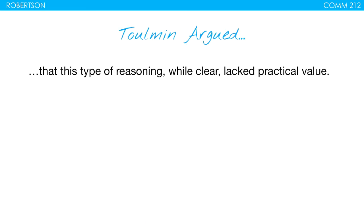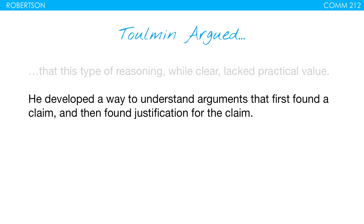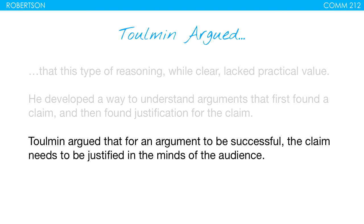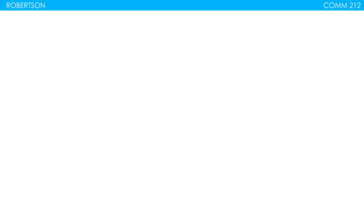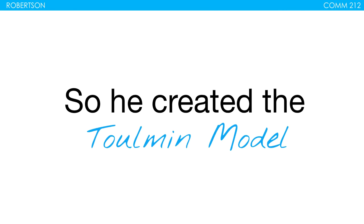Toulmin also argued that syllogistic logic, while clear, lacked practical value. So he developed a way to understand arguments that first found a claim and then found justification for the claim — as opposed to using premises. He says: what's the claim, and then we're going to find justification around the claim, which is typically how arguments are structured. He argued that for an argument to be successful, the claim needs to be justified in the minds of the audience. So he created the Toulmin model — which is pretty cool that he named it after himself — with six different components.